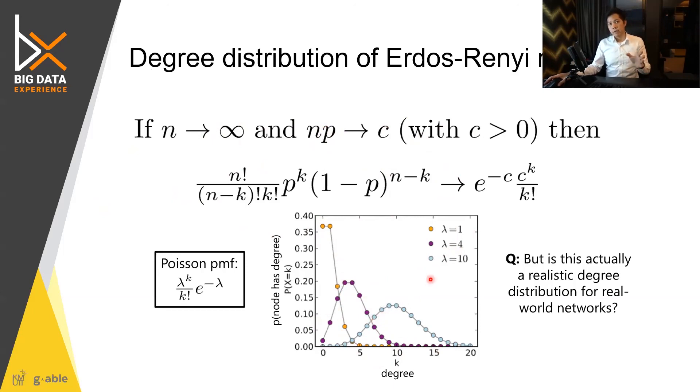Once you have NP having N time P that have about 10, 20, about that more than one, then you would have the distribution that looks like this one. So this is actually the Poisson distribution.